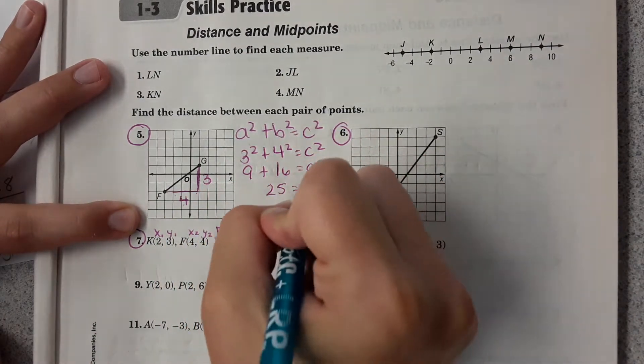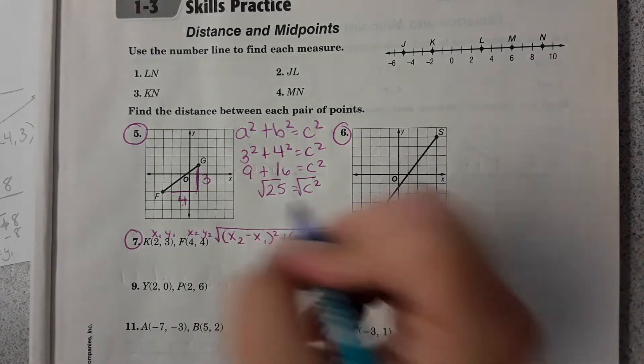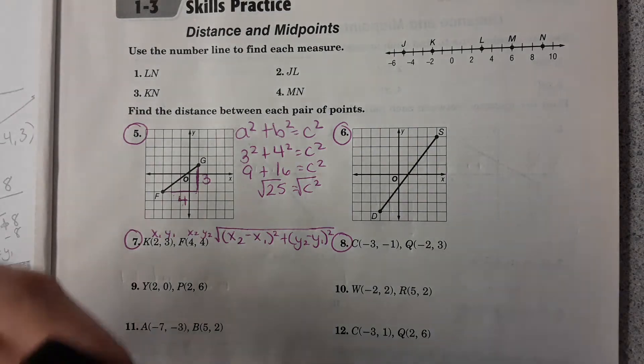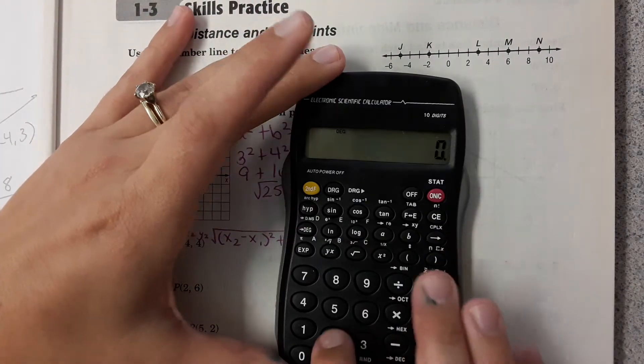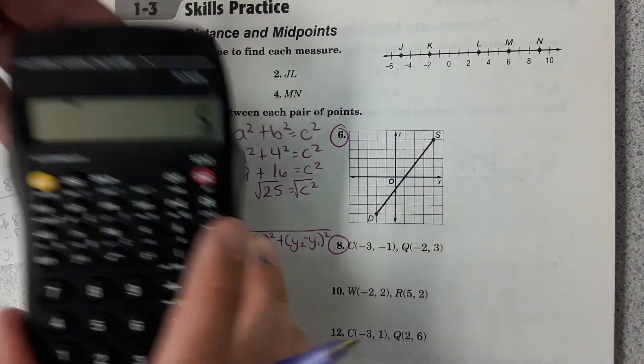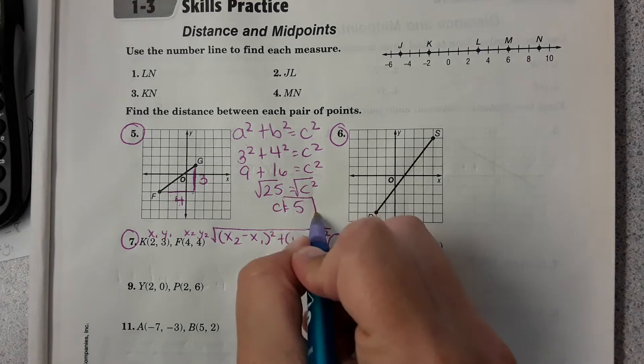You should have gotten 25 equals C squared. And then just take the square root of both sides to get C by itself. Square root of 25, you might know that off the top of your head. If you're trying to do it in the calculator, just do 25 and then hit the square root button to get 5. So that's the answer to the first one.